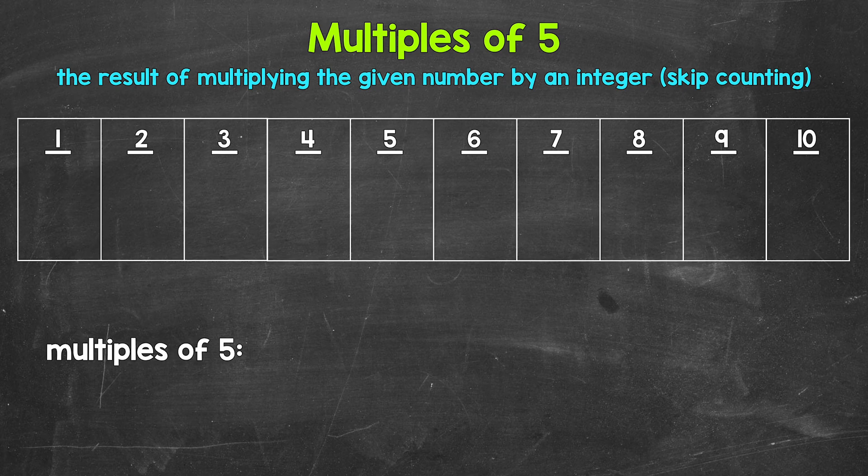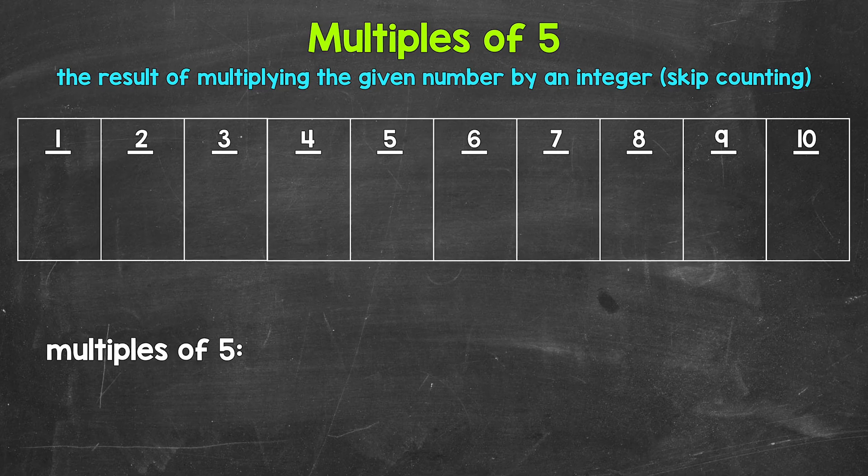So taking a look at the multiples of 5, let's start with 1 times 5. That gives us 5. 5 is the first multiple of 5. Then we have 2 times 5. That's 10. 10 is the second multiple of 5. Moving on to 3 times 5, that's 15.